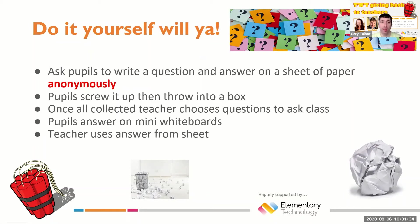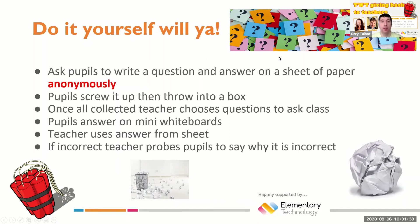If you know that the answer is wrong, you could then probe pupils and say, why is this answer wrong? What should it be? I think where the anonymous element comes in — if a student has written that question and got the wrong answer, they may feel a little bit embarrassed. So if it's anonymous, nobody knows who wrote that question, and they won't feel embarrassed if they got the answer wrong.